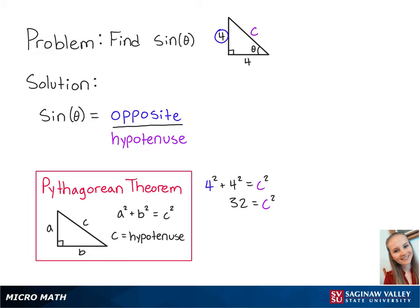We can take the square root of both sides so that we have the square root of 32 equals C. We can simplify the left side to be 4 times the square root of 2, which is equal to C.